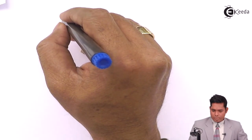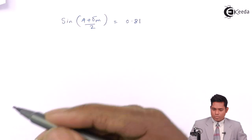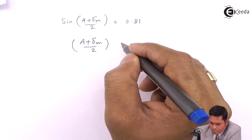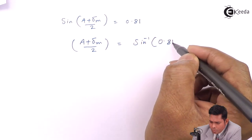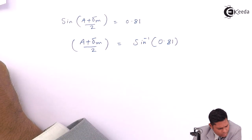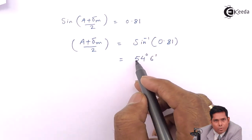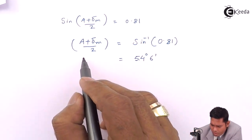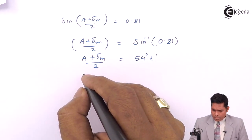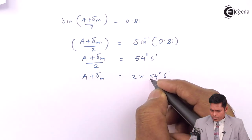Now I take the sine inverse of 0.81. Looking that up from the table, it comes out to be 54 degrees and 6 minutes. So (A plus delta m) divided by 2 equals 54 degrees 6 minutes, and therefore A plus delta m equals 2 times 54 degrees 6 minutes, which is 108 degrees and 12 minutes.